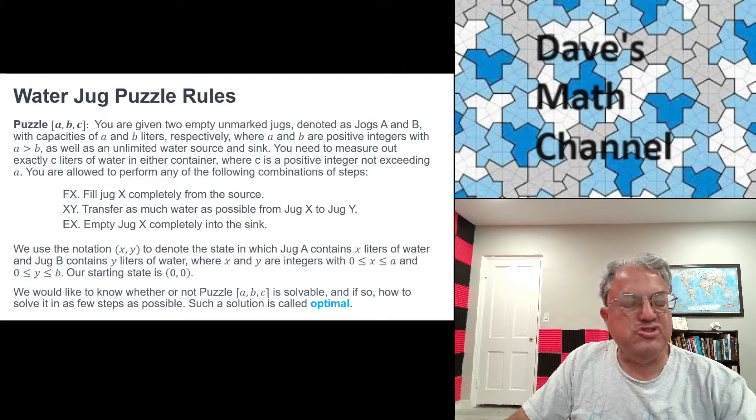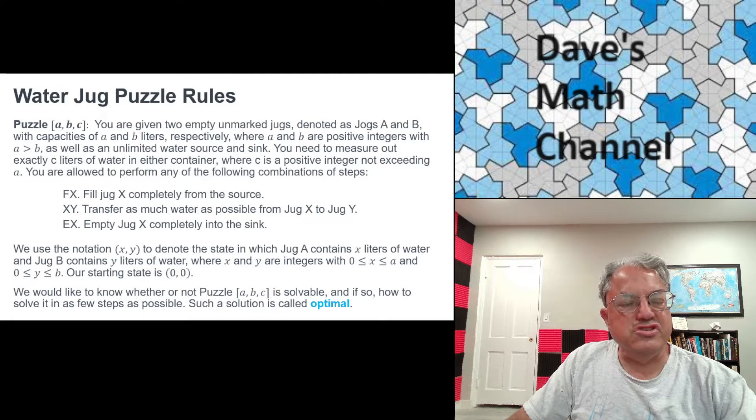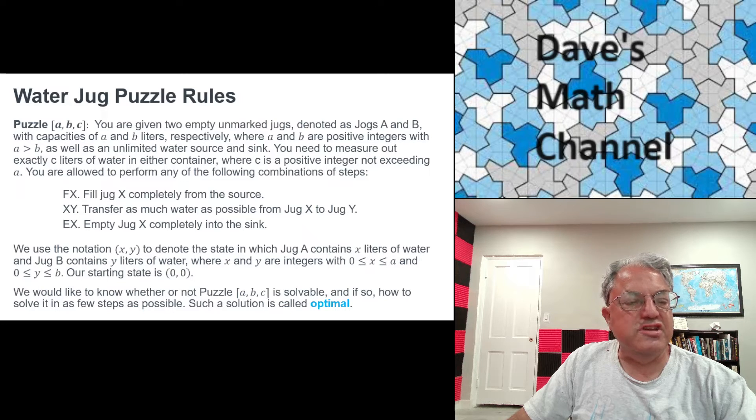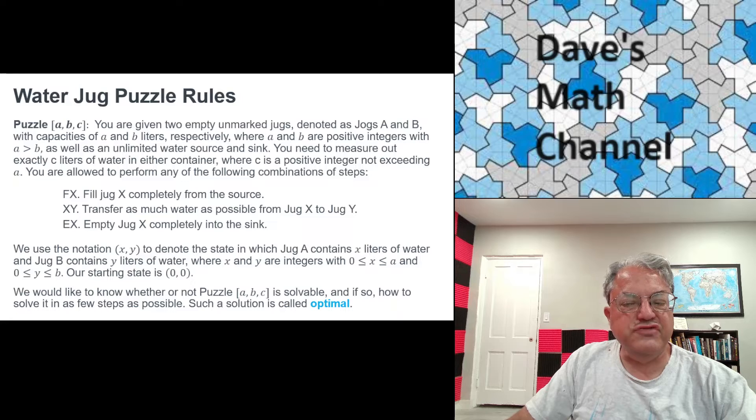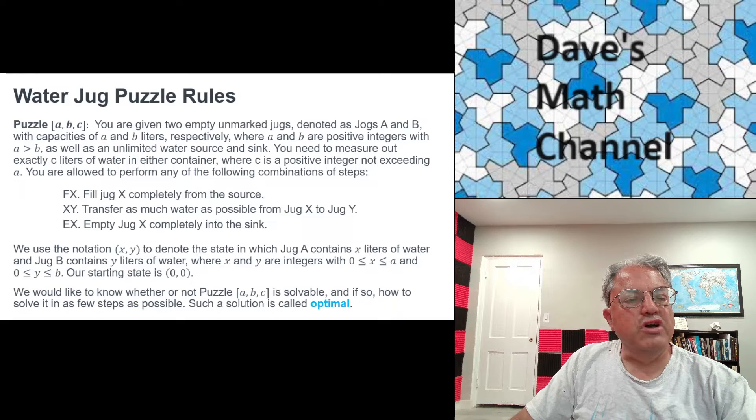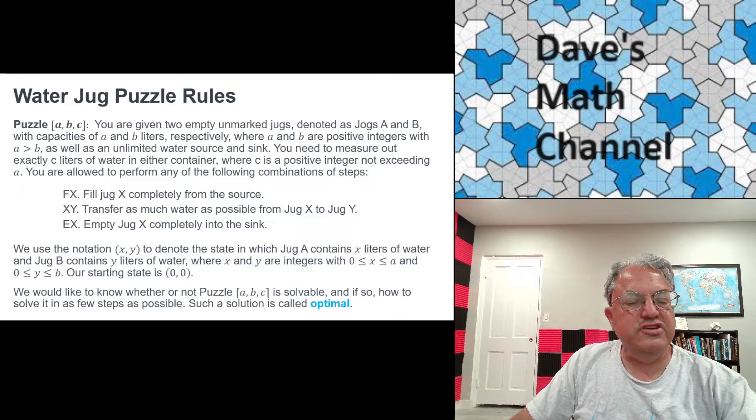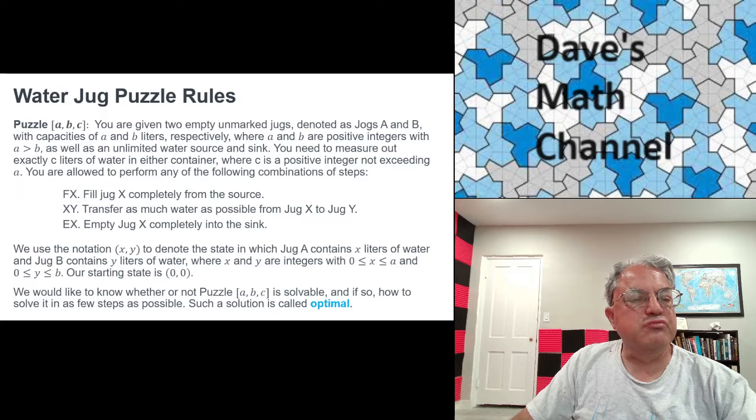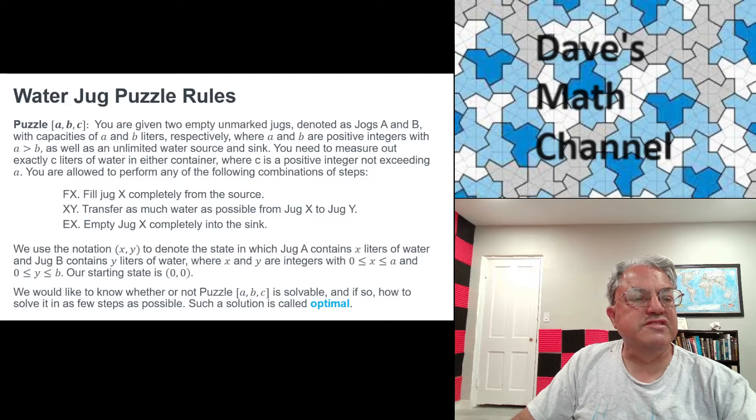Well, so let's look at the most general case. So this is what we call water jug puzzles. And first I have to explain the puzzle to you. So let's fully generalize this puzzle. Let's call it puzzle [a,b,c] where a, b, and c are all positive integers with a greater than b and also a greater than c. And what we want to do is we want to measure out exactly c liters of water using jug capital A, which has capacity small a liters, and jug capital B, which has capacity small b liters.